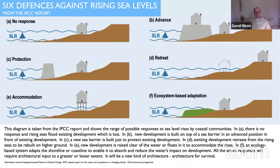Starting with A in the top left, no response where you just let the seas rise and you accept the damage and the destruction caused as coastal communities are flooded out. Moving to the right, B, advance, means that you try and build a monolithic barrier of some kind or a seawall in front of existing development, and on top of that structure you can put some kind of new development because being a massive structure it can function as a foundation for new buildings.